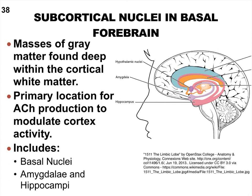We have two kinds of subcortical nuclei — they sit deep within the white matter, deeper to the cortex of the cerebrum. We'll talk about the basal nuclei and start with the amygdala and hippocampus — their plurals are amygdalae and hippocampi. These nuclei are the primary location for acetylcholine production in the brain to impact what the cortex does. They collect information from cortical parts and help make serious decisions about what the body should do.